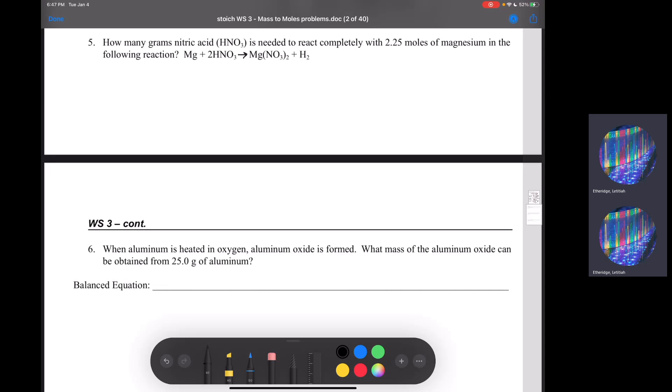Alright, so it doesn't change how I'm going to build my roadmap. So I'm starting with moles of magnesium. Check your roadmap if you don't believe me. We're going to go from moles of magnesium to moles of nitric acid to grams of nitric acid.